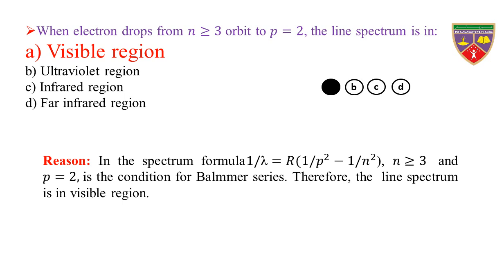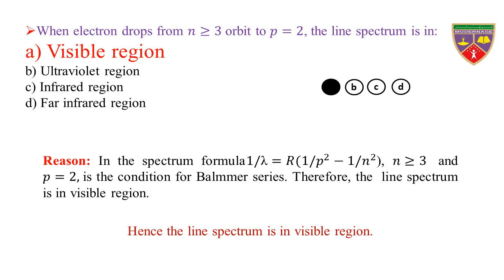Reason: In the spectrum formula 1/λ = R(1/p² − 1/n²), n ≥ 3 and p = 2 is the condition for the Balmer series. Therefore, the line spectrum is in the visible region. Hence, the line spectrum is in the visible region.